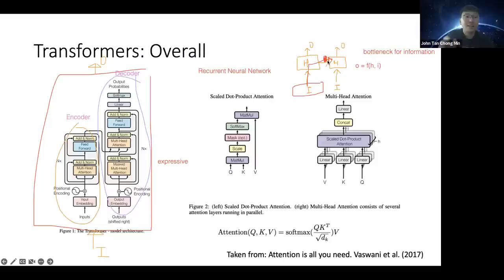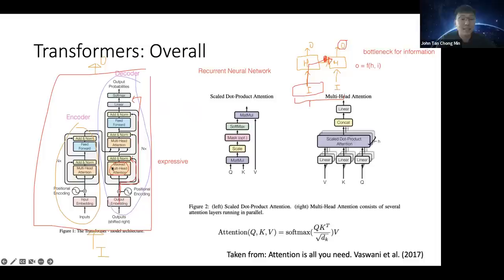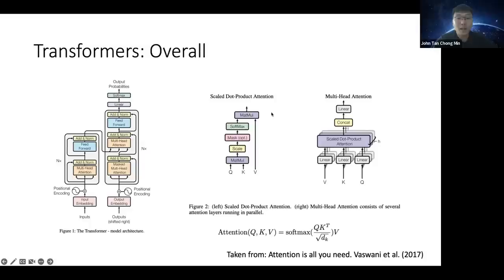A Transformer does not have this bottleneck because it has skip connections, and the attention mechanism allows the output to attend directly to every single input. There is no more information bottleneck between input and output — you can express everything in the output from all the input positions because of this attention mechanism. Out of the entire Transformer architecture, the attention mechanism is what makes it work.